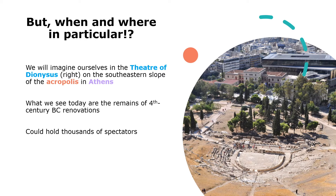Our tragedians are Aeschylus, Sophocles, and Euripides. 5th century BC Athens is ludicrously broad, so let's narrow this down. We're going to imagine ourselves sitting in the Theater of Dionysus on the south-eastern slope of the Acropolis in Athens. You can make out some of the seating going back into the hillside and the orchestra area.